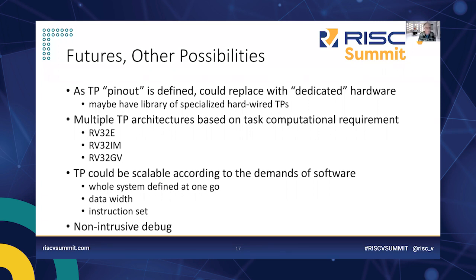Something else we can do — which we won't delve into today — is non-intrusive debug. When you're at the debug phase on real hardware, you want to see what's going on. With an RTOS, adding extra debug tasks interferes with real-time performance. With thread processors, no problem: we simply instantiate one or more additional thread processors for debugging. They wouldn't steal resources from anyone else and you could see in real-time what's going on. That's quite an exciting possibility.